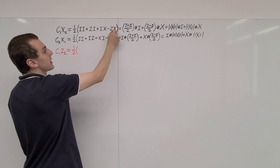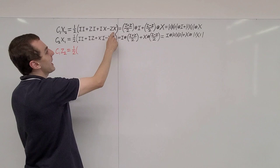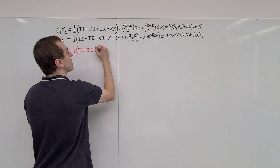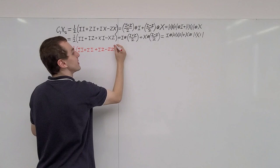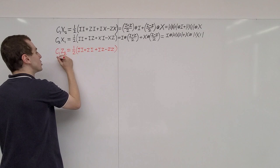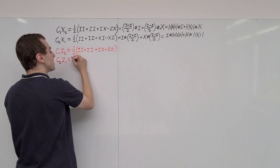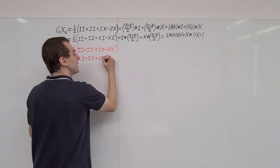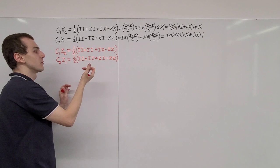Sandwiching the target qubit between two Hadamards turns the X's into Z's. So for C1Z2, we still have II and ZI unchanged, but IX becomes IZ and ZX becomes ZZ. These four terms give the controlled Z gate. If we swap the role of the two qubits to get C2Z1, we swap the order of the terms: II stays, IZ becomes ZI, ZI becomes IZ, and ZZ stays. So we get II plus ZI plus IZ plus ZZ, with an overall coefficient of one-half.